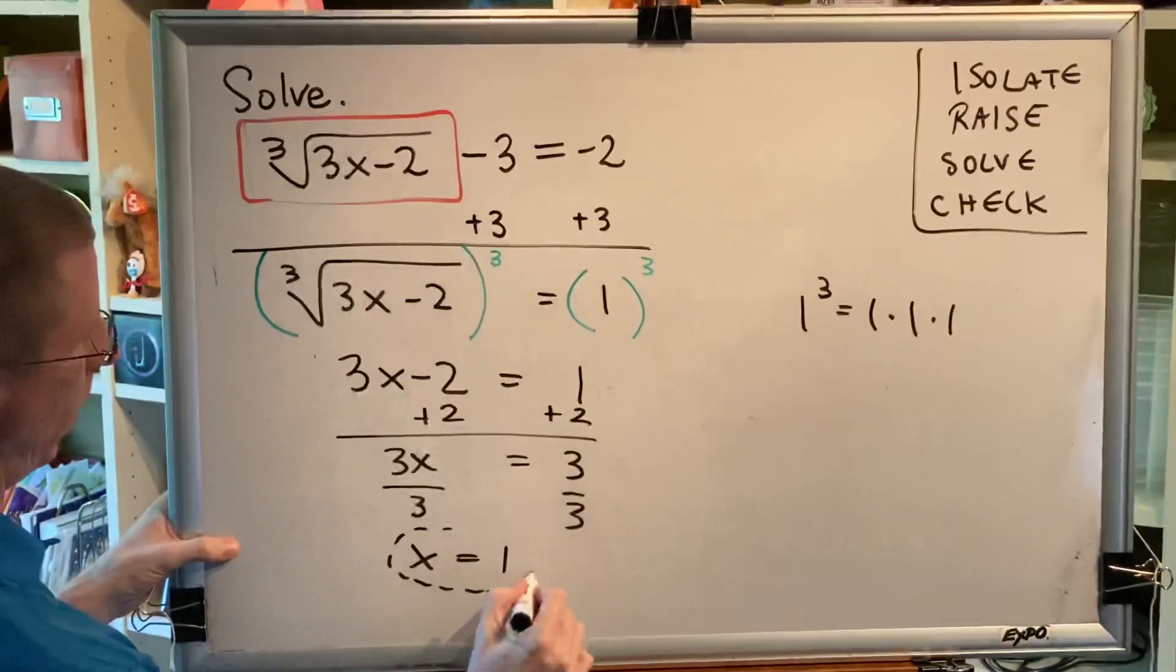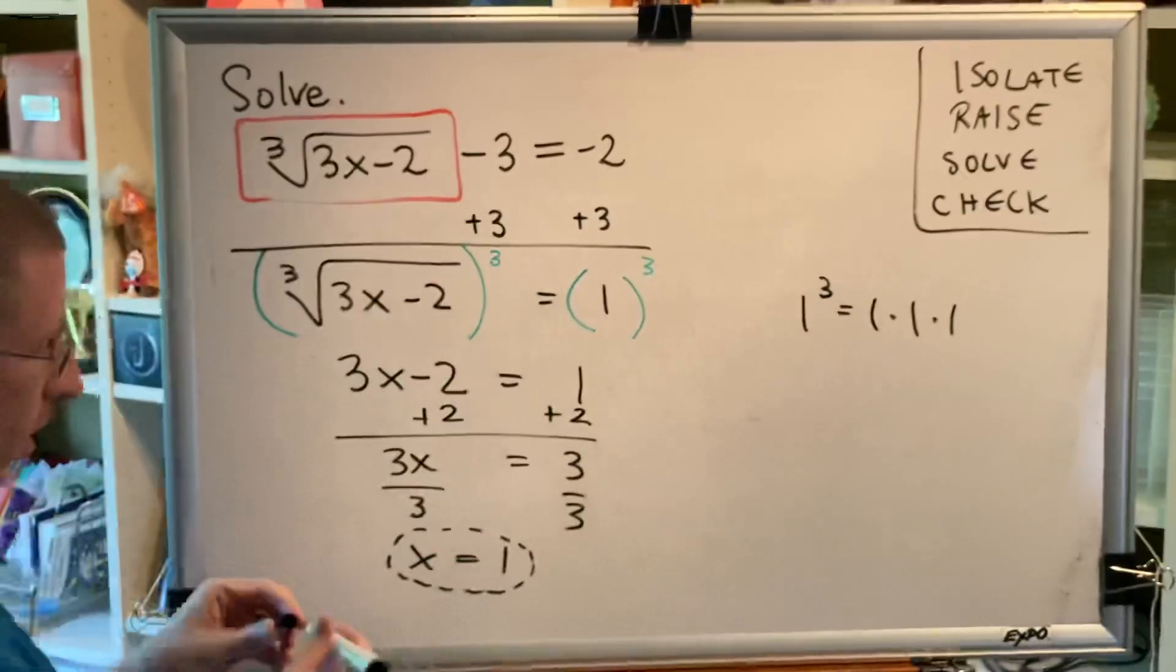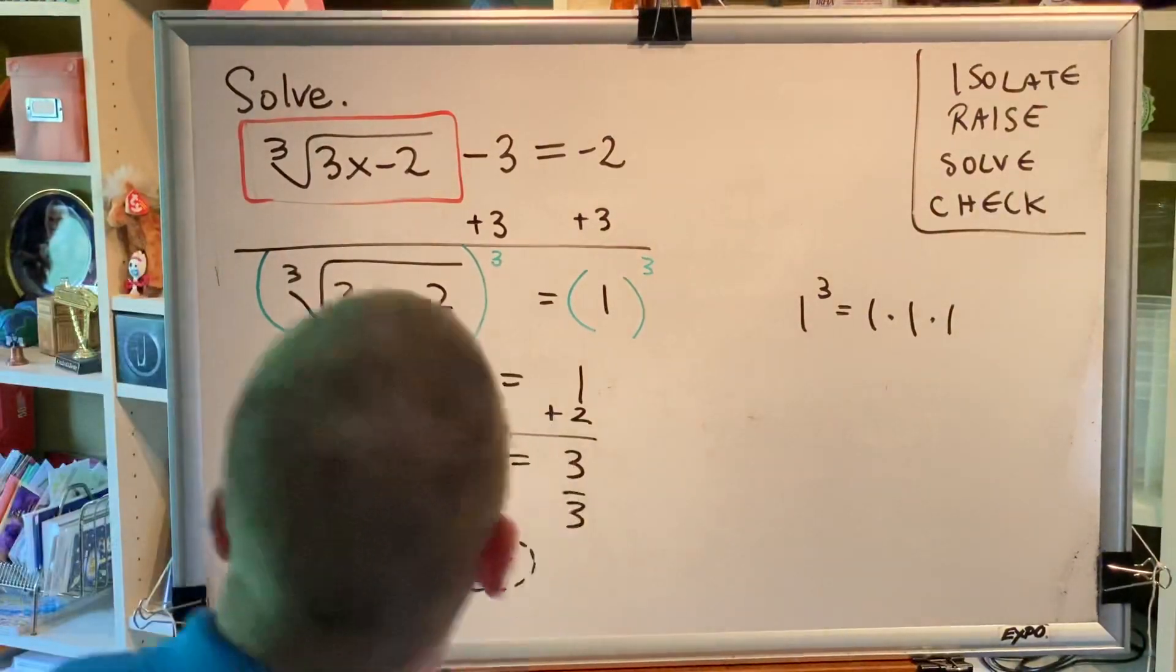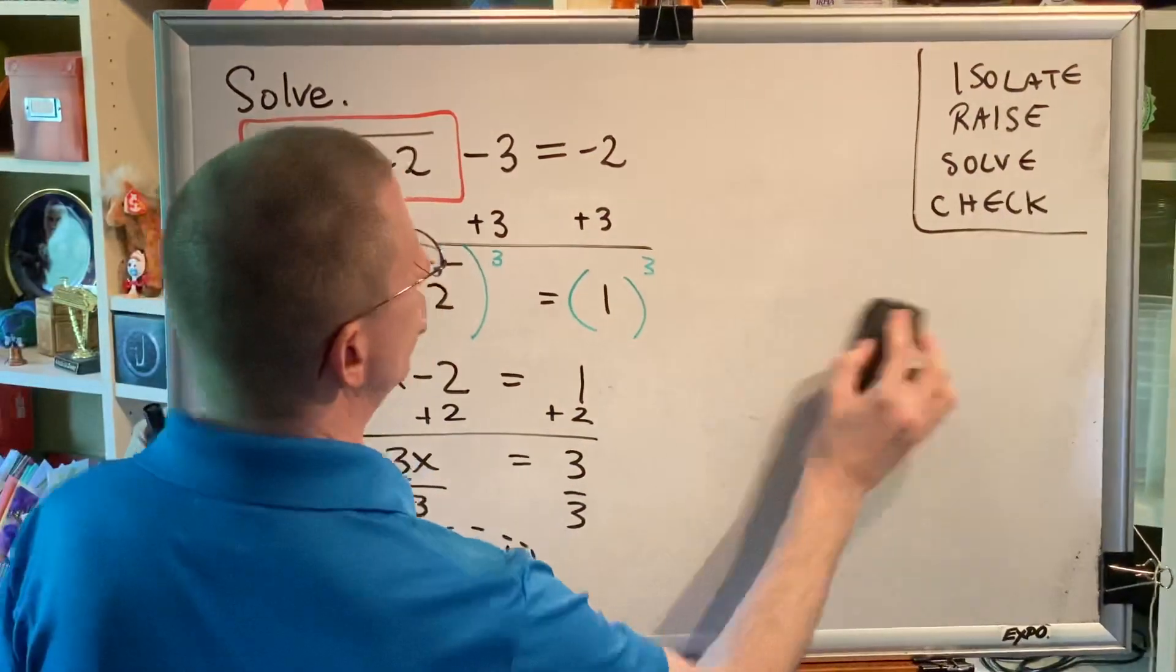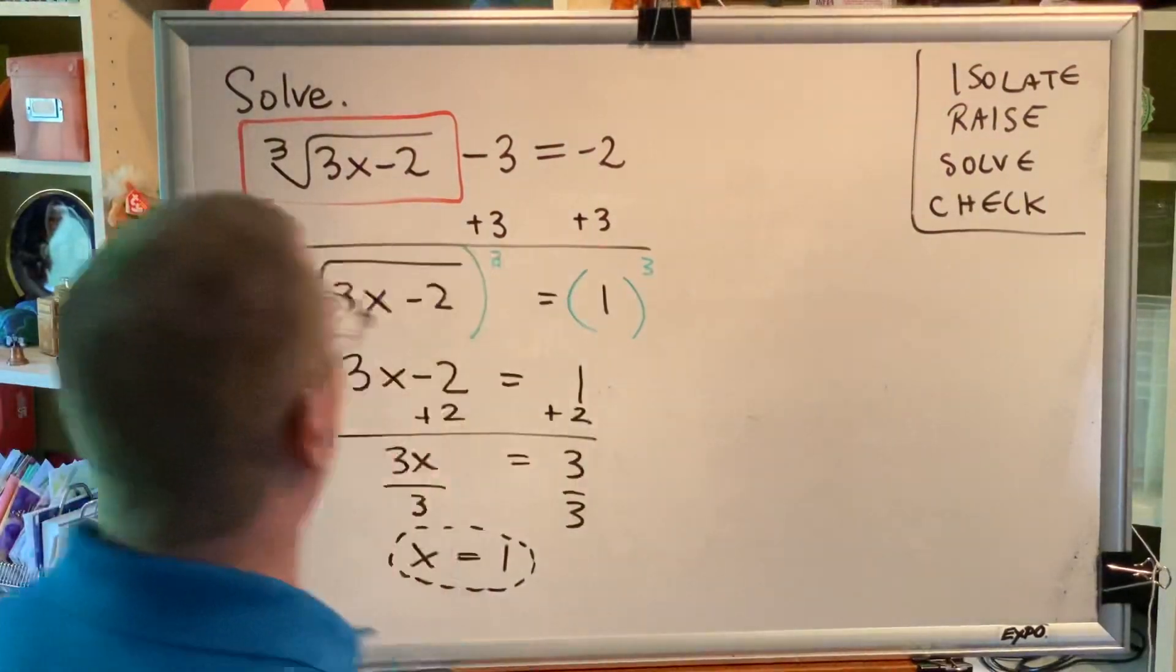We have what our answer might be, but it could be an extraneous solution, and therefore we must check it. The way you check a solution is by plugging back into the original equation you started with.